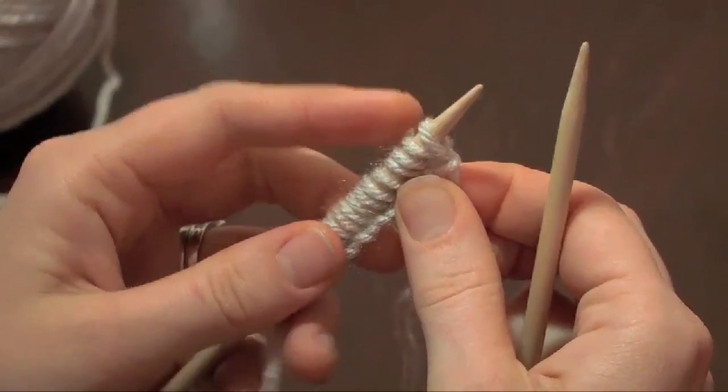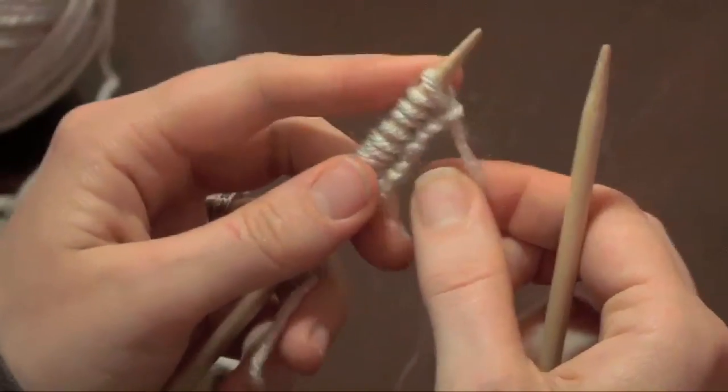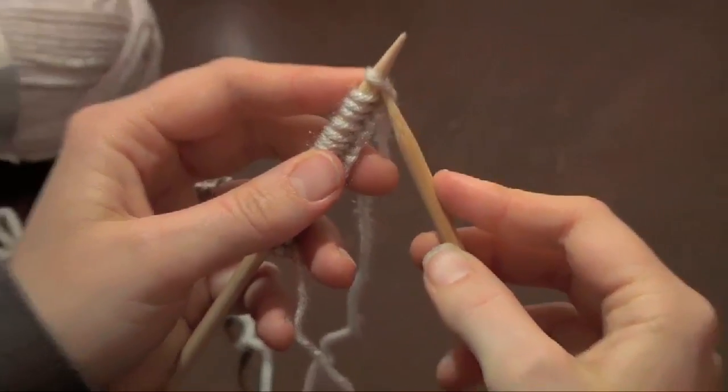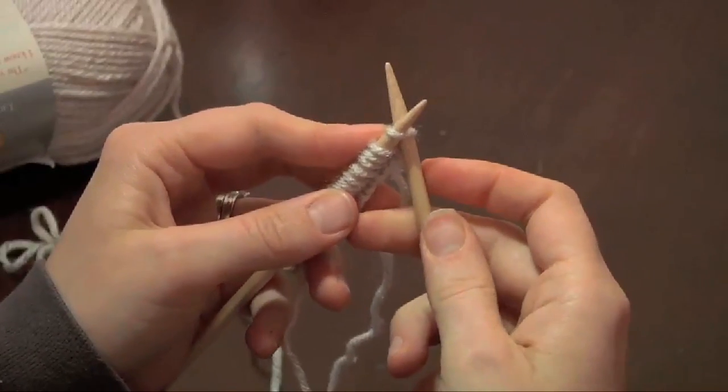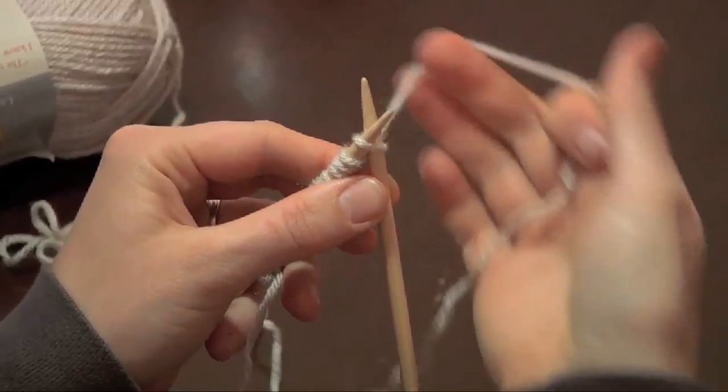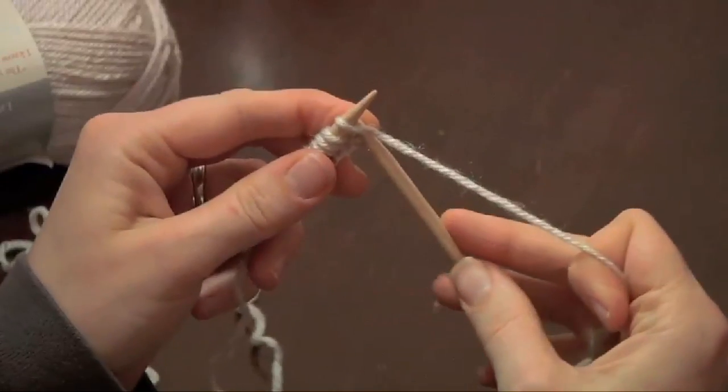The nice thing is, because you learned the knitting cast on, the knit stitch is very similar. You're going to take your first loop on your left hand needle, and you're going to slide your right hand needle through in the back, creating that X. You're going to slide your yarn around and through, and you're going to grab and pull through.